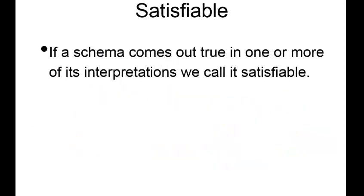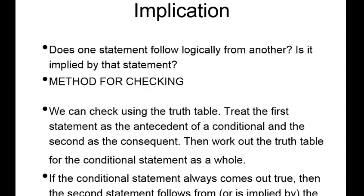Satisfiability is just the property that a sentence has where at least one row comes out true. If a formula or schema comes out true in one or more of its interpretations, we call it satisfiable — it can be satisfied, it can be the way the statement says it is.